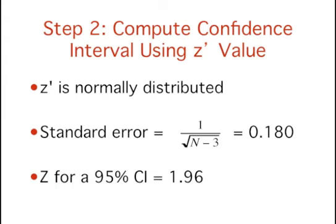Finally, we need to know the Z for a 95% confidence interval. This can be found using the normal distribution calculator and is 1.96.